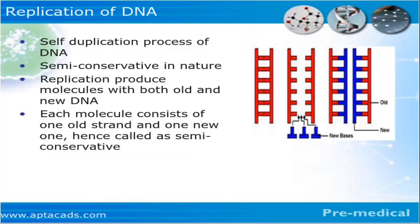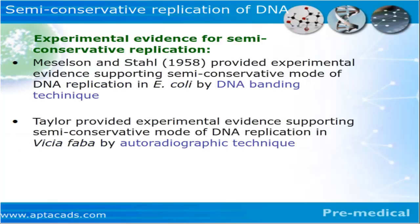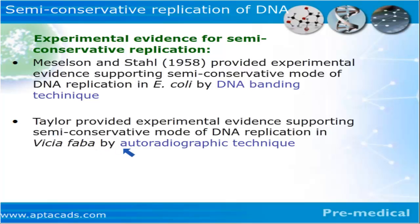There are two types of evidences for DNA replication. The very first is given by the Meselson and Stahl experiment, done with E. coli using the DNA banding technique. Similarly, in the case of eukaryotes, it was proved by Taylor through their auto-radiographic study on the plant Vicia faba.